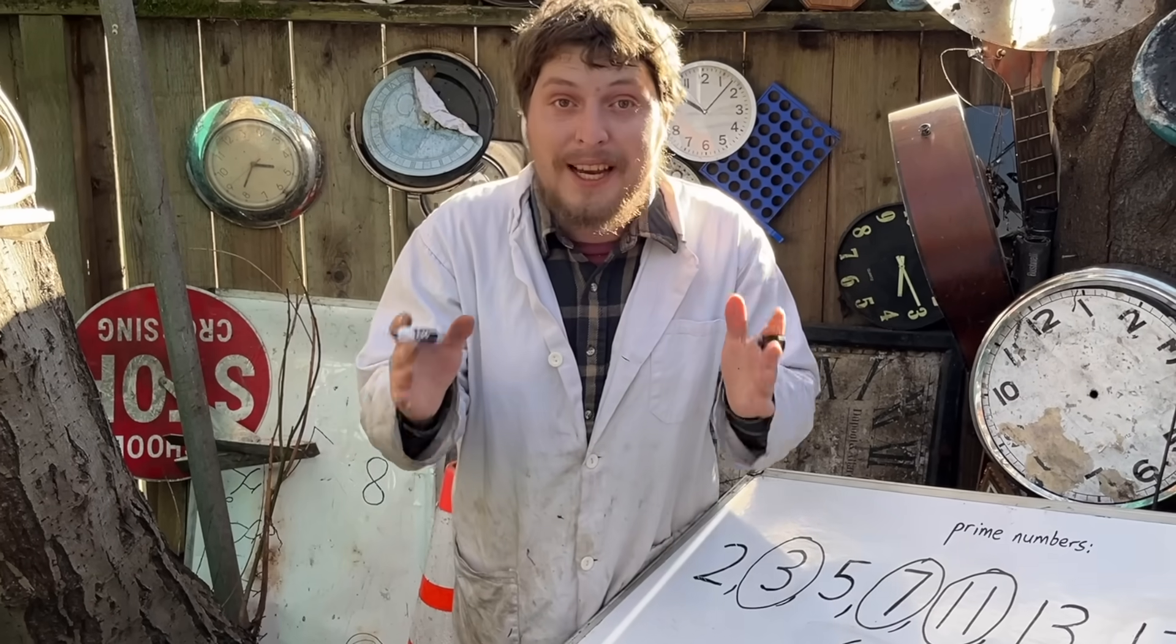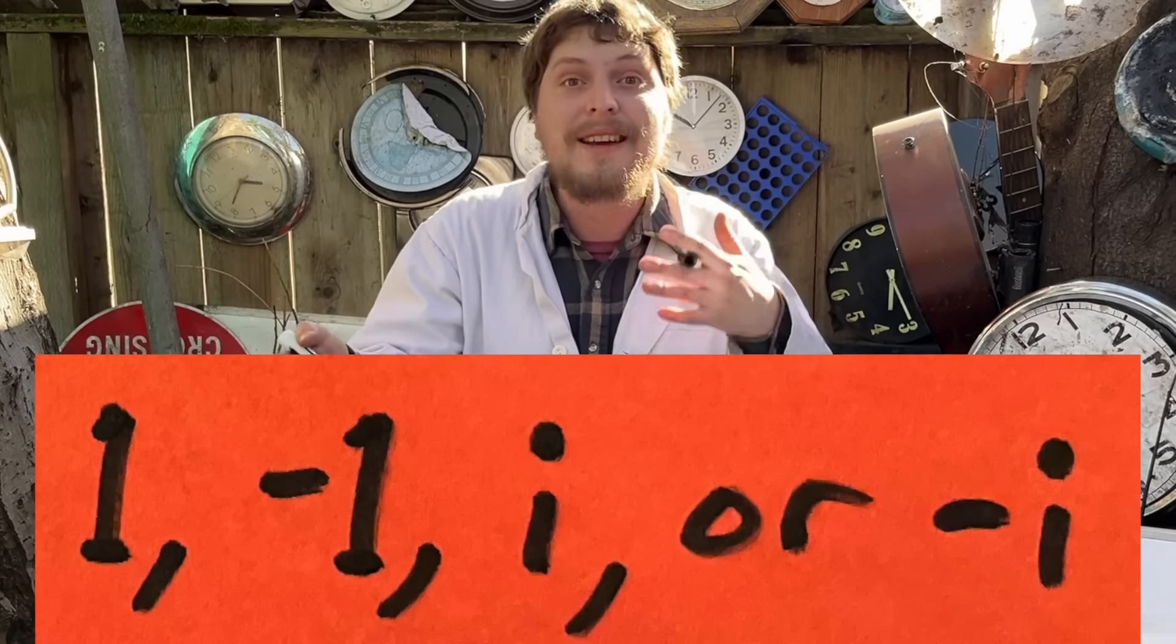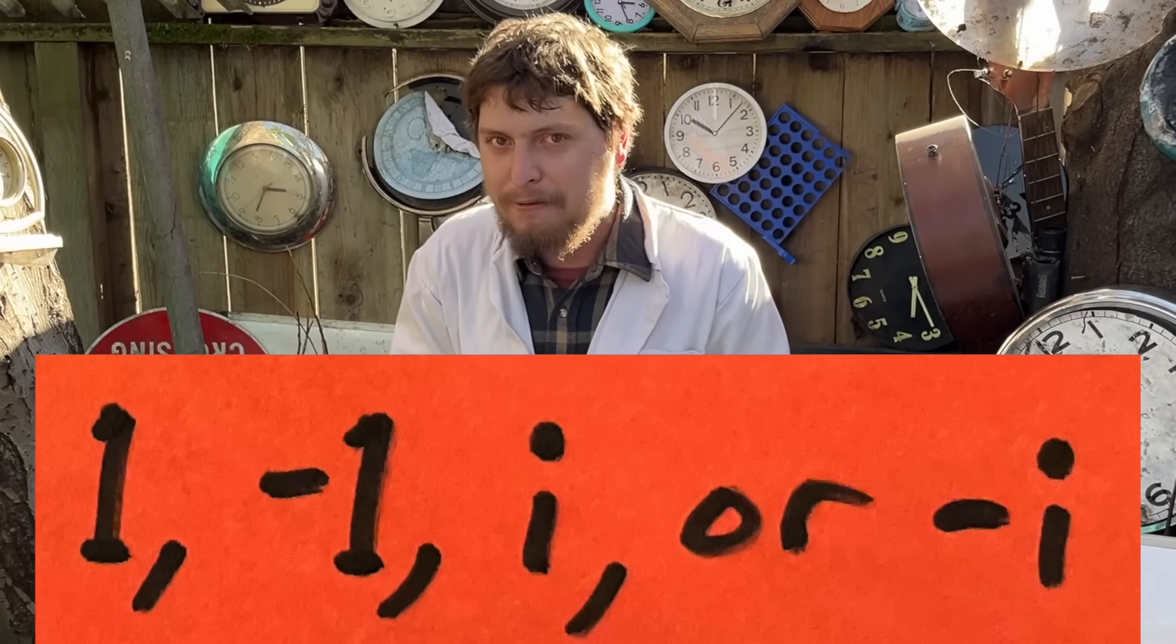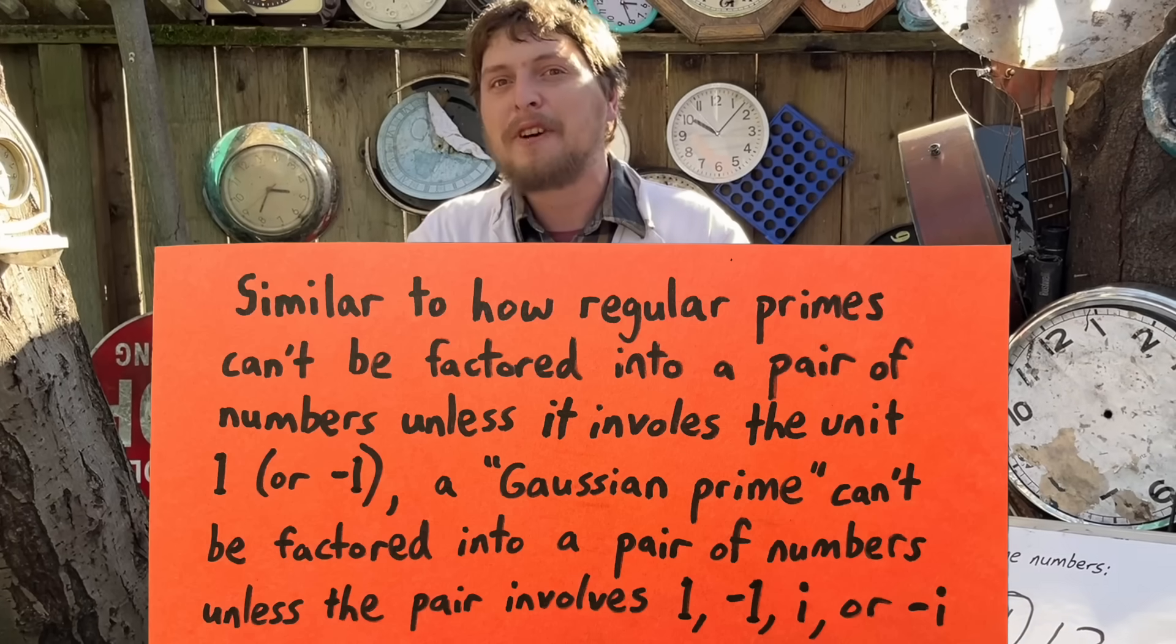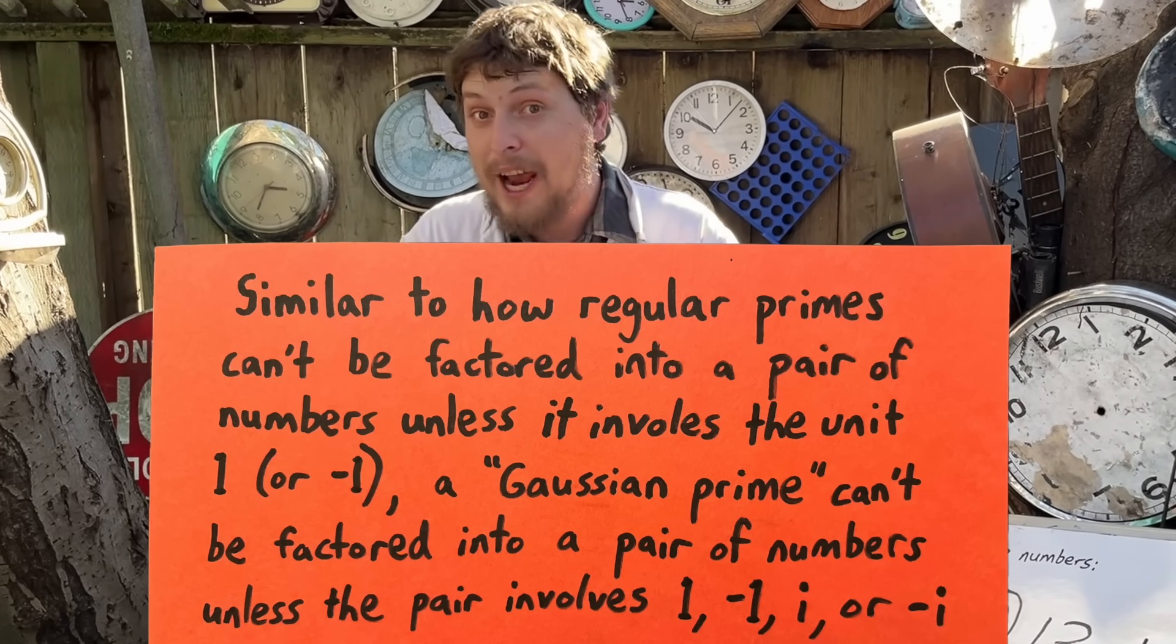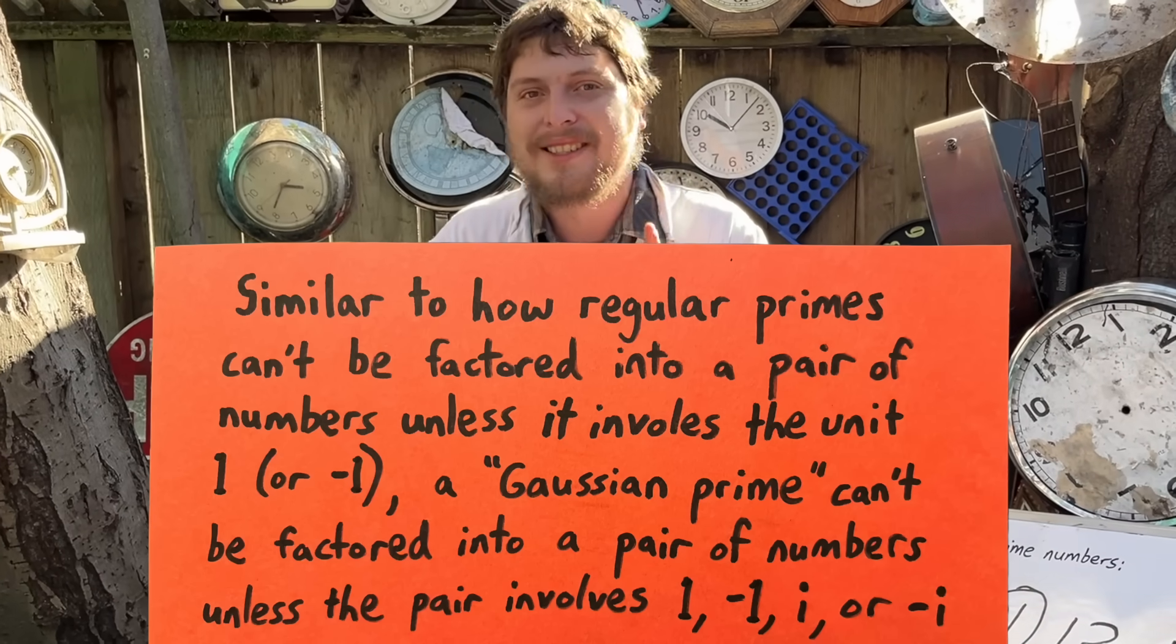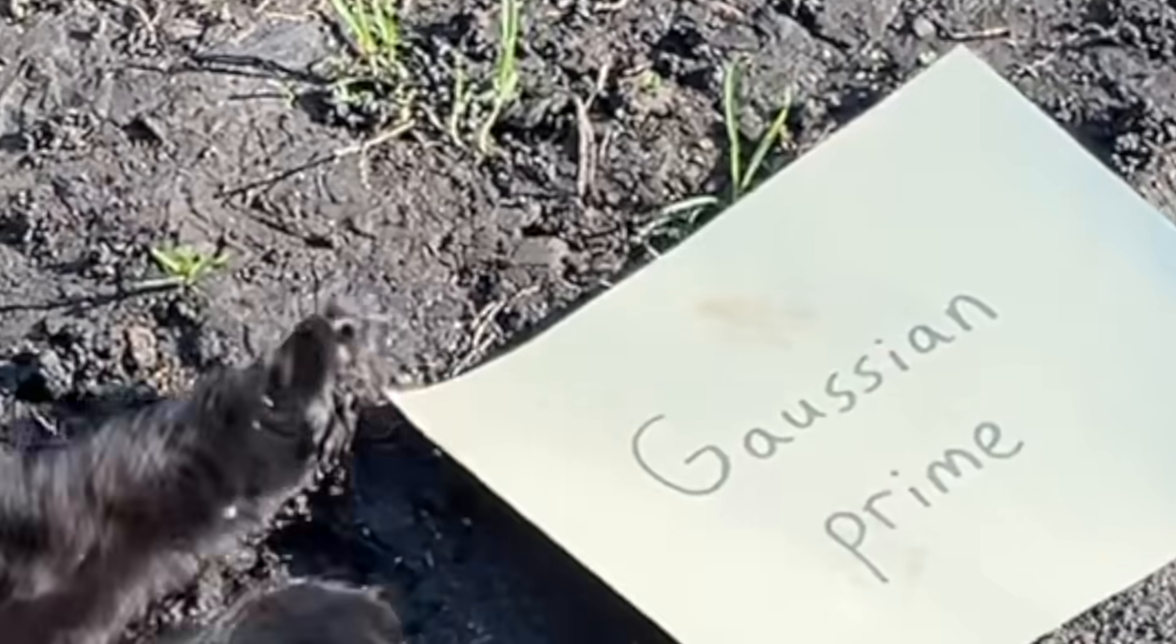In the realm of the Gaussian integers, there are four units, 1, negative 1, i, and negative i. And if a number can only be factored into pairs that involve one of those units, it's considered a Gaussian prime.